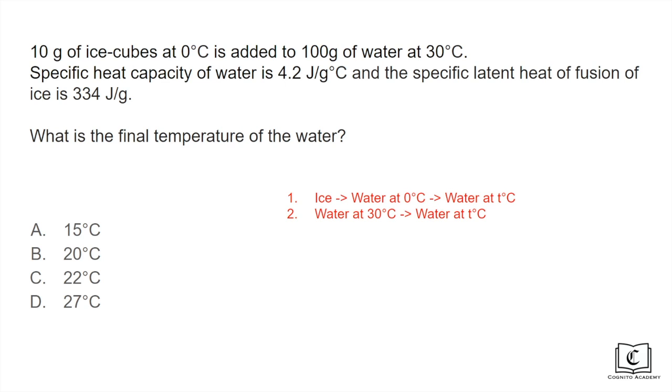What actually happens is that the ice gains heat from the water and turns into water at 0 degree celsius. And then this water at 0 degree celsius gains some more heat from the water and turns into water at some T degree celsius which is more than 0 but less than 30.